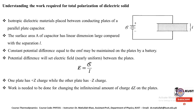To store charge on the plates of the capacitor, work is required. Work is to be done for changing the infinitesimal amount of charge DZ at the plates. The magnitude of work done in this case is DW equal to epsilon DZ, where epsilon is the symbol used for EMF and DZ is the infinitesimal amount of charge stored on the plates of the capacitor.